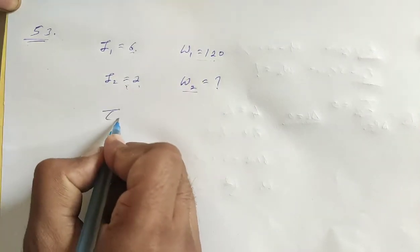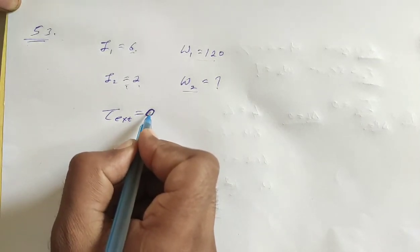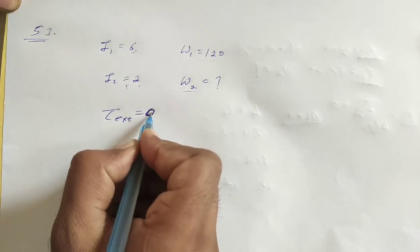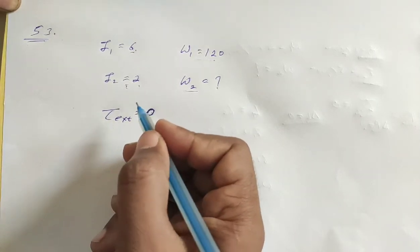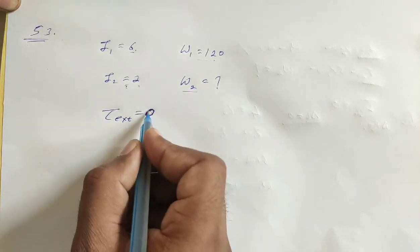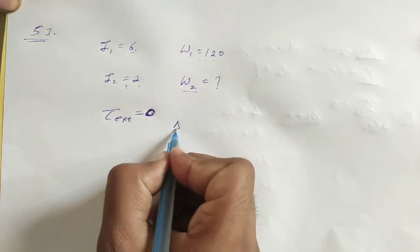So, what is external torque here? Zero. No external torque. The system itself is the same. The system is the boy plus chair and the balls. So, if there is no external torque, we can say that external torque is zero.